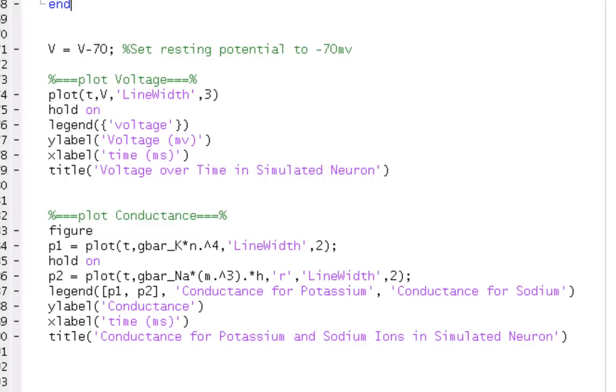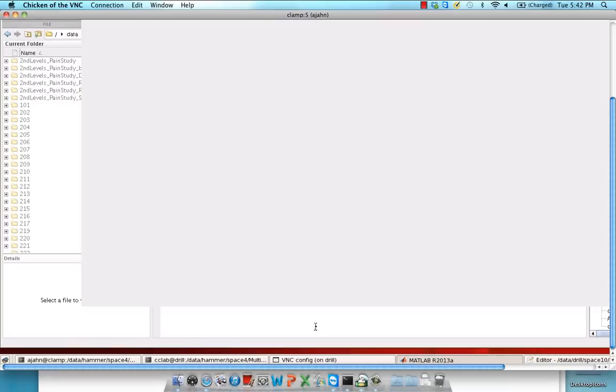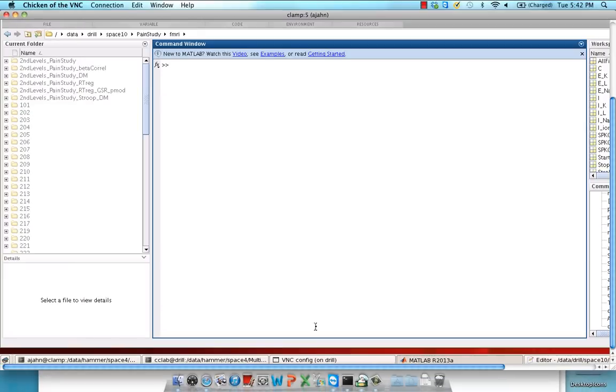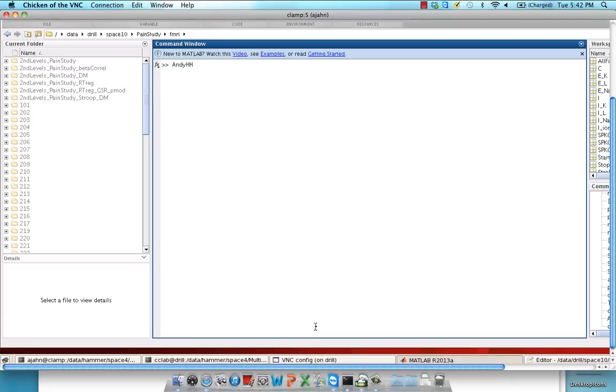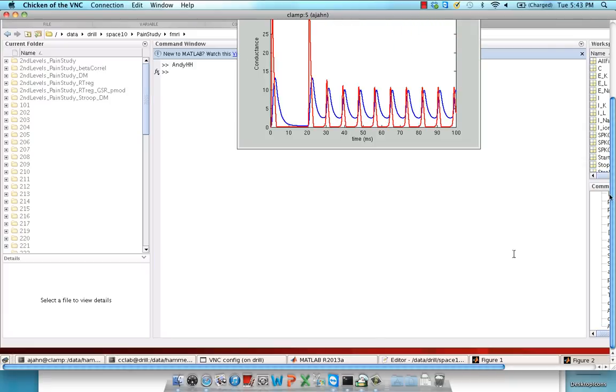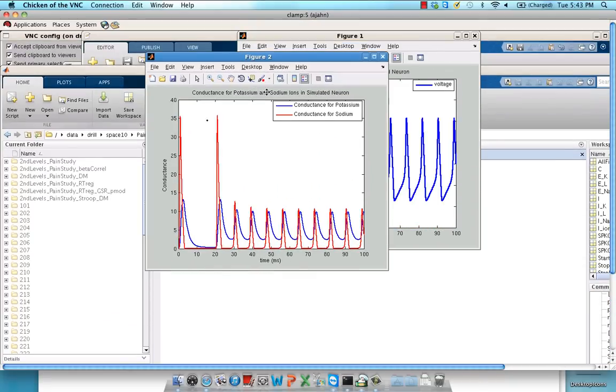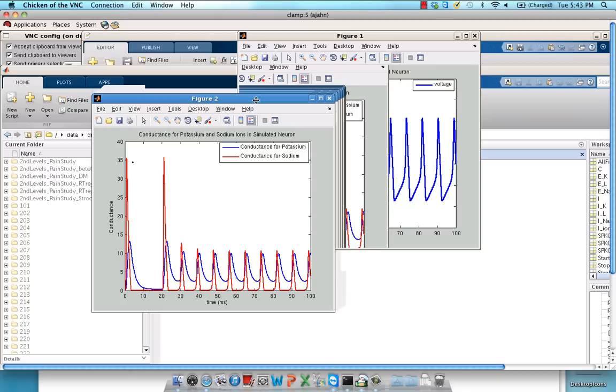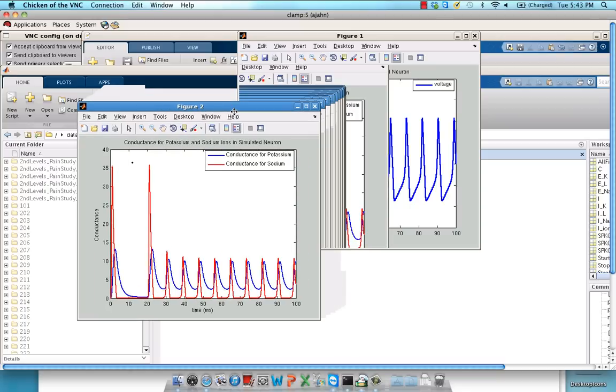So if we go ahead and run this. And VNC has been really slow. I'm sorry guys. But you'll see a couple different plots right here. And this should validate a lot of what we already know about action potentials and conductances of different channels.